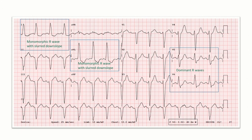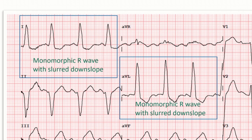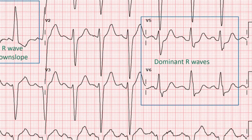And finally, lateral leads also show broad monomorphic or predominant R waves, which show some slurring as well.